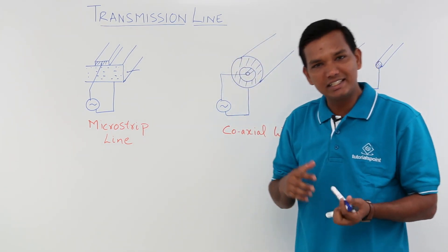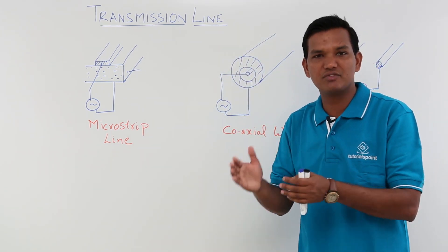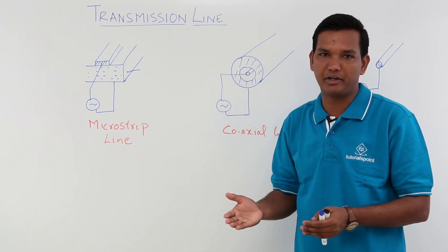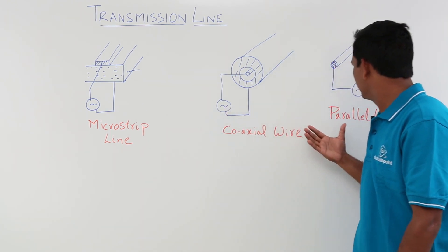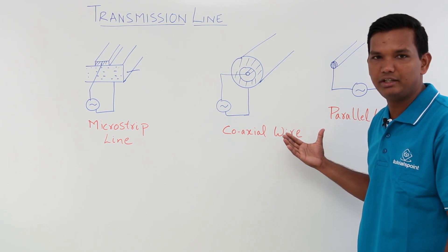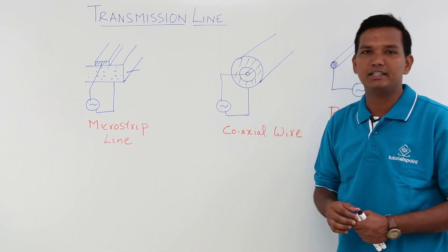So transmission line is nothing but a method of transferring power from one point to another point. As we have already showed you three types of transmission lines. We will see more on this in the next videos.